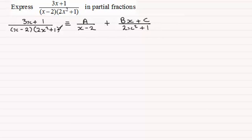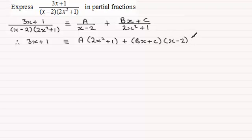Now we multiply both sides by the denominator here, so that's going to leave us with 3x plus 1, being identical equal to the constant A, times the quadratic factor, 2x squared plus 1. And then you're going to have plus bx plus c, multiplied with the x minus 2. Now to work out A, B and C, we choose values of x, or compare coefficients.